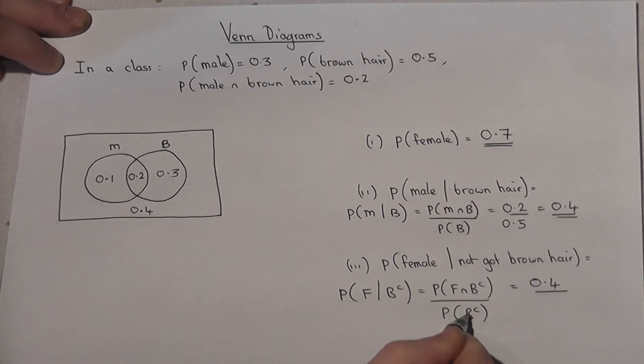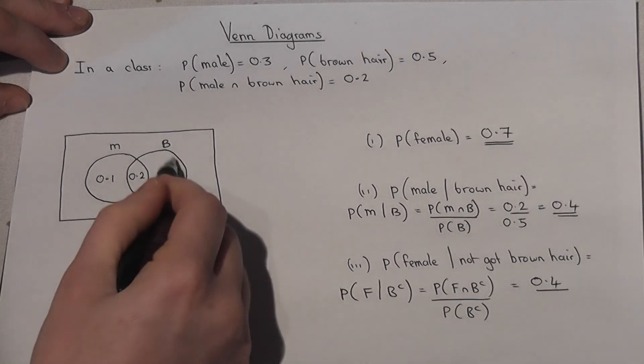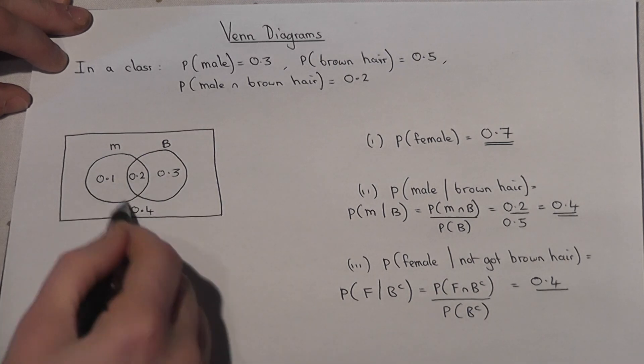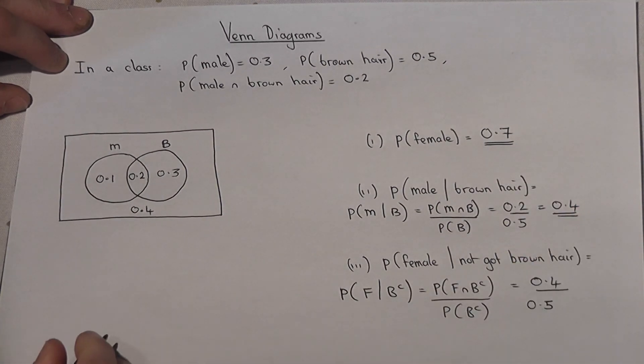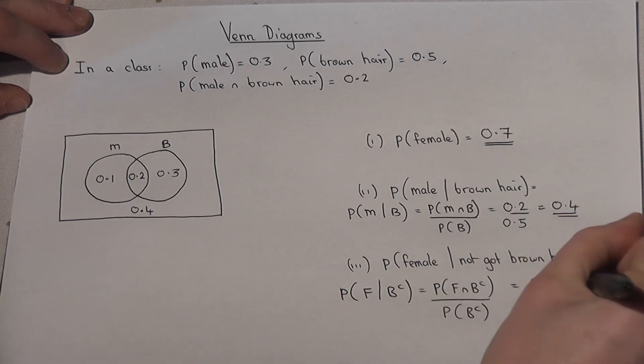And the chance of not having brown hair again is anything not in that circle which is 0.5. So work it out: 0.4 over 0.5 and you get 0.8.